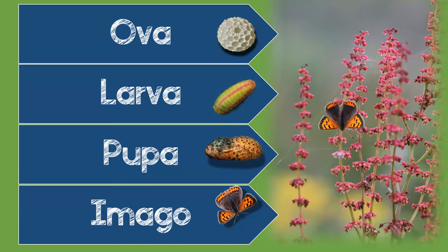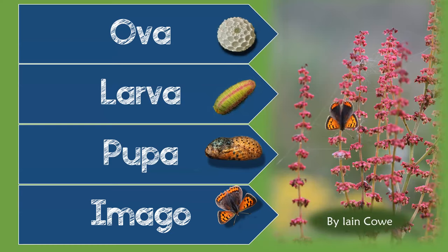The slideshow here shows the four stages of the small copper life cycle: ova, larva, pupa, imago. Also not photographed here are the various larval stages, of which there are four. In other species sometimes five, and those are known as instars.